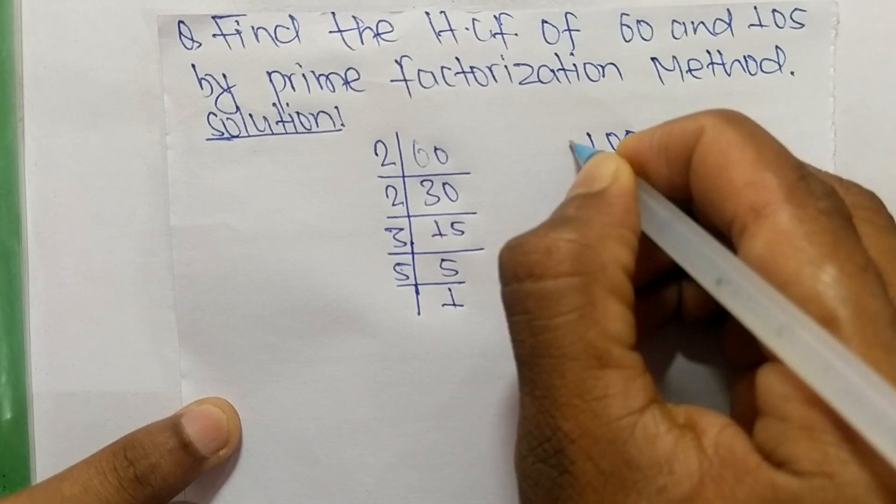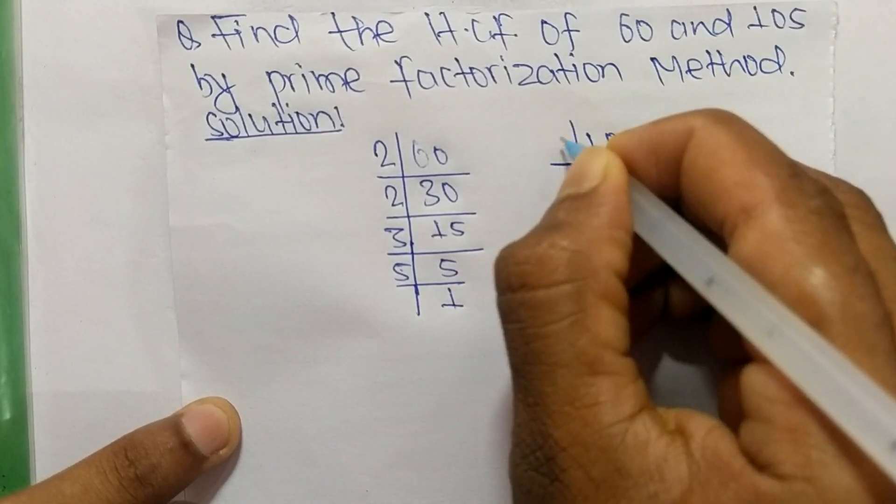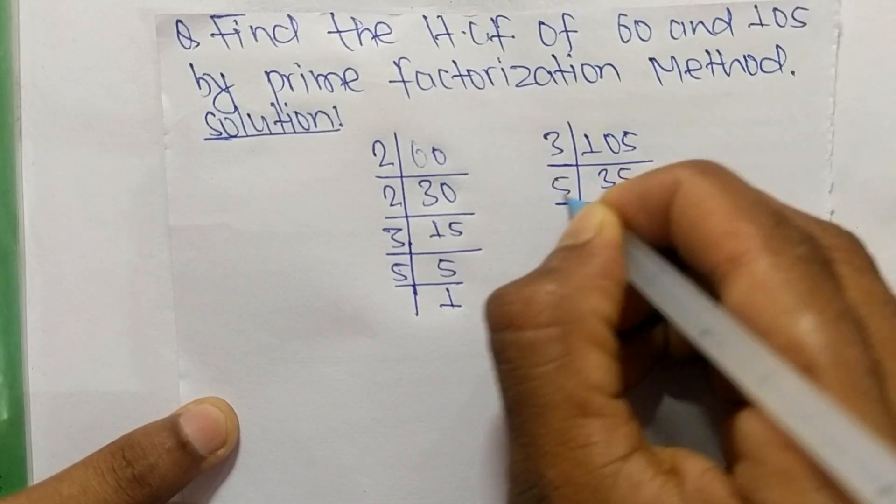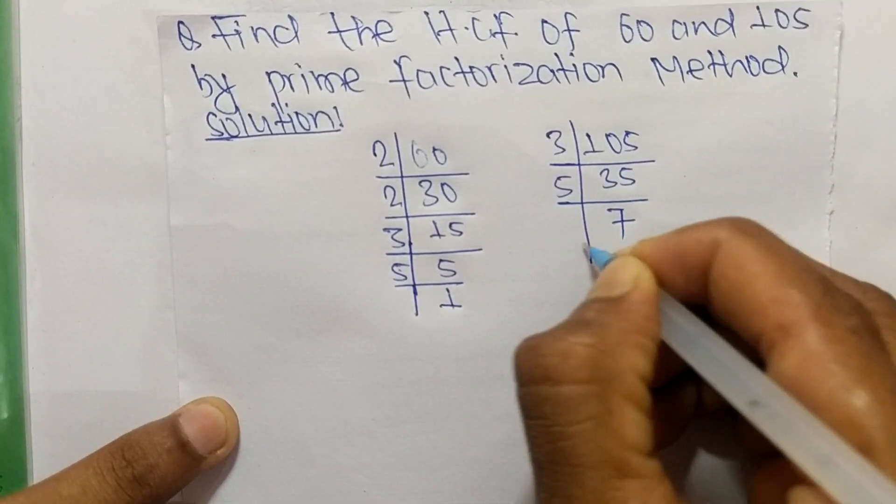Like as the prime factors of 105 are: it is 3 times 35 mean 105, 5 times 7 mean 35, and 7 times 1 mean 7.